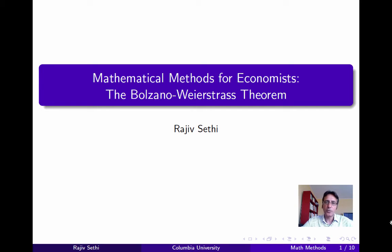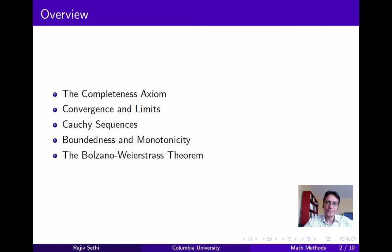In this segment, we'll discuss an important result called the Bolzano-Weierstrass theorem, which states that every bounded real sequence has a convergent subsequence. Here's an overview: we'll start with the completeness axiom for real numbers, discuss convergence and limits of real sequences, introduce Cauchy sequences and link them to the completeness axiom, define boundedness and monotonicity, and then state and prove the theorem.